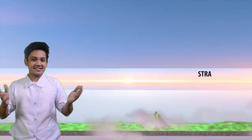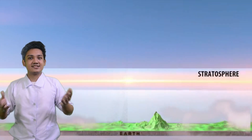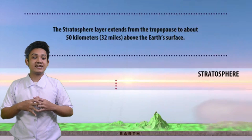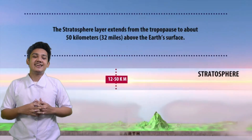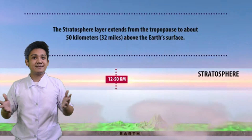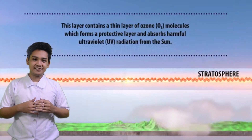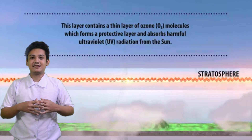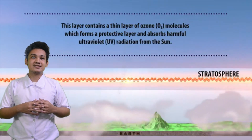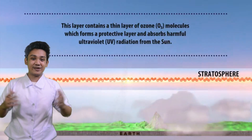Next is the stratosphere. It extends up to 50 km high. In this region, we can find the ozone layer, which absorbs and scatters solar ultraviolet radiation.